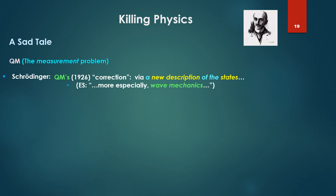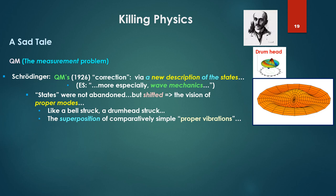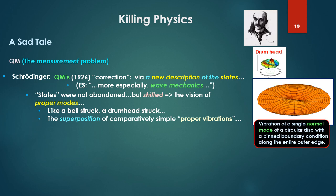So Schrodinger says, well, QM's correction to the state of affairs already sitting there, supposed photoelectric effect, explanation thereof. This correction was via new description of the states, via wave mechanics. States not abandoned but shifted, he said, to the vision of proper modes, like a bell struck, a drum head struck. The superposition of comparatively simple proper vibrations is the vibration a single normal mode of a circular disc.